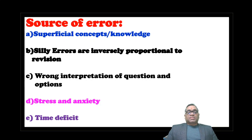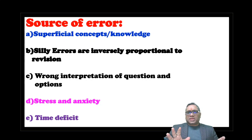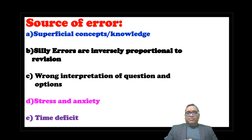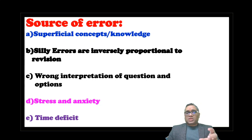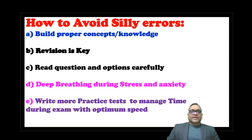The fifth source is time deficit. Many students can't read all questions and options, and in the last 15–30 minutes they randomly mark answers — not intuition-based, just random — due to poor time management from lack of practice. So to summarize: superficial knowledge, lack of revision, wrong interpretation of questions, unnecessary stress, and poor time management are the five key sources of silly errors.